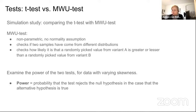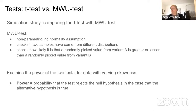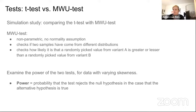A simulation study was done comparing the t-test with the Mann-Whitney U test. The Mann-Whitney U test is a non-parametric test with no normality assumption that checks if two samples come from different distributions, specifically how likely it is that a randomly picked value from group A is greater than or less than a randomly picked value from group B. The study examined the power of both tests for data with varying skewness — the power being the probability of rejecting the null hypothesis when the alternative is true, which you want to be high.